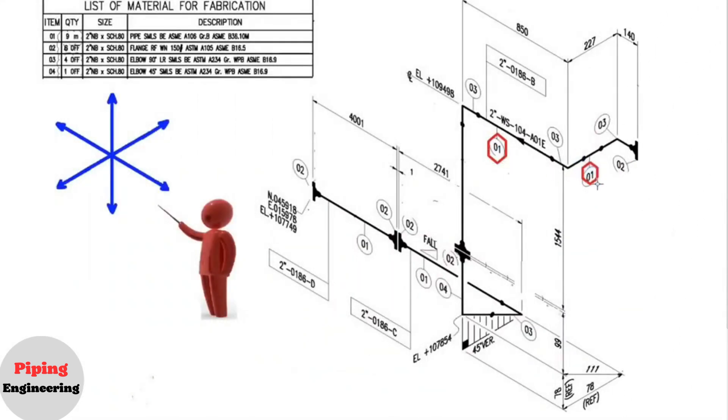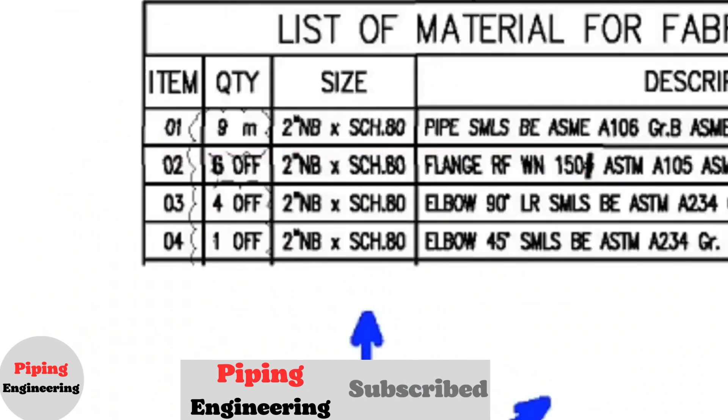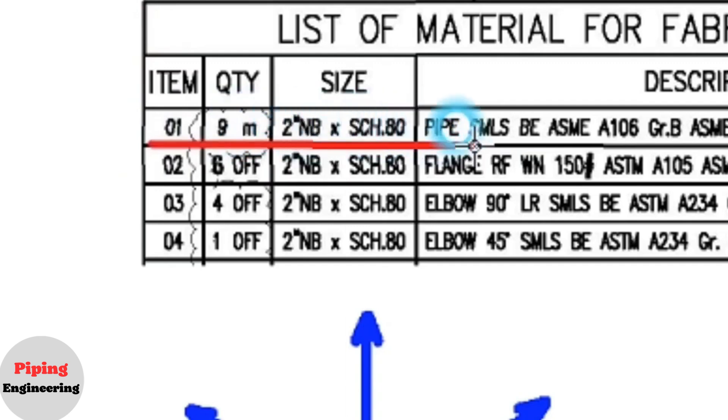These are details number 1. Let's look at the material list. Detail number 1: 9 meters, 2 inch, schedule 80 pipe, ASME A106.